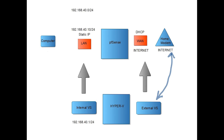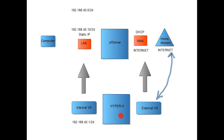Let's have a look at the overview. In the center we have PFSense, which has two network adapters: one WAN network adapter and one LAN network adapter. The WAN is going to get its IP address from a DHCP server. The LAN is going to get a static IP address from us. The IP address range I'm using is 192.168.40.0/24. The static IP address for the LAN side of PFSense will be 192.168.40.10/24, and that LAN will be connected to the internal virtual switch of Hyper-V, which will have IP address 192.168.40.1/24.